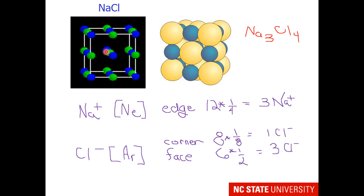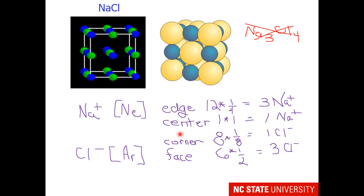What we've missed is there is an ion in the center — you may be able to see it peeking out of the structure. There is one more sodium ion in the center. There is one sodium ion in the center, wholly within the unit cell, so that gives us one more sodium ion. Now our ratio is 4 sodium ions to 4 chloride ions, or when simplified, sodium chloride.